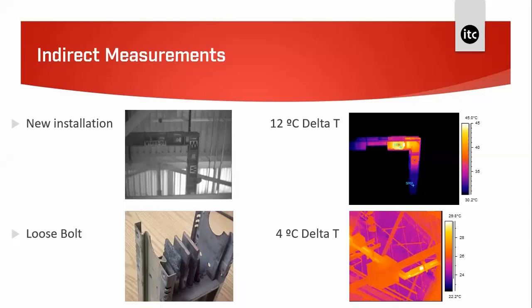Added to this problem is the fact that many busbars have a low emissivity finish on the exterior — meaning they could be reflective. Some knowledge of the construction and assembly can help give an indication of where the joints are. Local heating near a joint could indicate a problem with the joint, and the temperature inside may be really high even when the external temperature rise appears low.